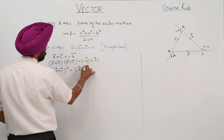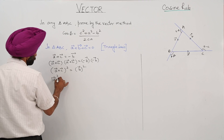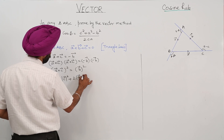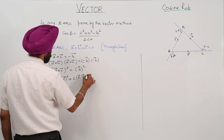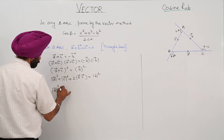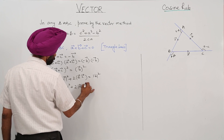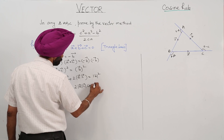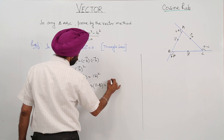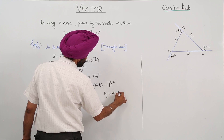This becomes: vector a plus vector c, whole square, is equal to vector b whole square. Using the identity: magnitude of a squared plus magnitude of c squared plus twice of vector a dot vector c equals magnitude of b squared. This gives: a squared plus c squared plus twice of magnitude a, magnitude c, cos(π minus B) equals magnitude of b squared, using the scalar dot product.